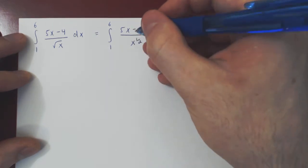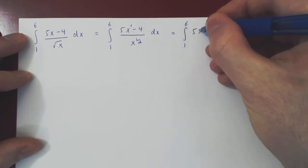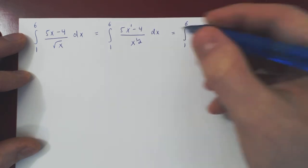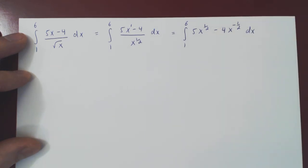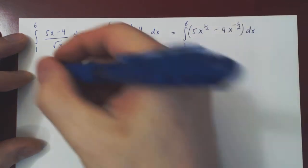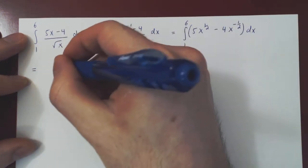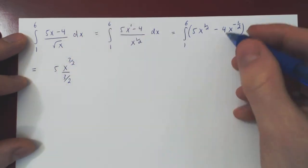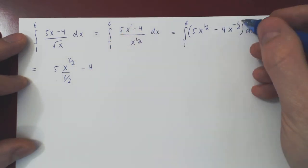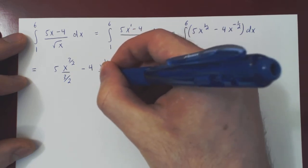So x over x to the 1 half, well x is x to the 1, 1 minus 1 half is 1 half, so it gives us 5x to the 1 half minus 4. 1 over x to the 1 half, bringing x up is of course negative 1 half. Now we can use the power rule. 5 is a constant multiple, so it stays there. 1 half plus 1 is 3 half, divided by 3 half, minus 4.